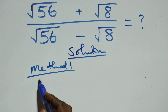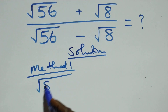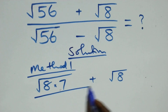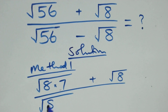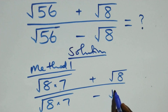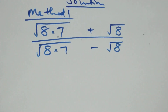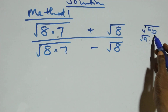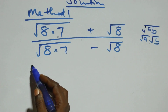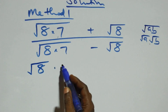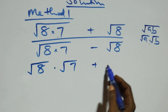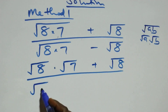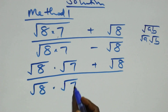We can write what we have — this becomes root eight times seven plus root eight, divided by root eight times seven minus root eight. This follows because root of A times B can be expressed as root A times root B. So we have root eight times root seven plus root eight, divided by root eight times root seven minus root eight.